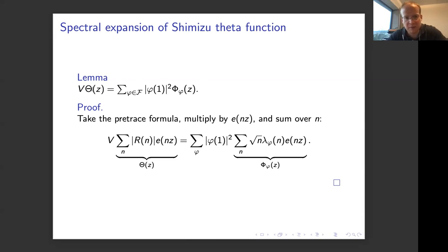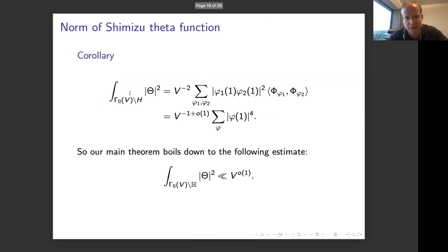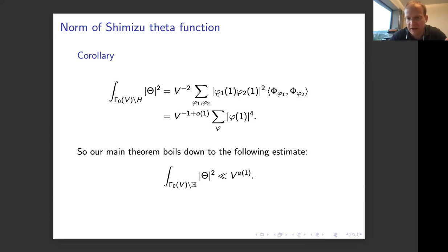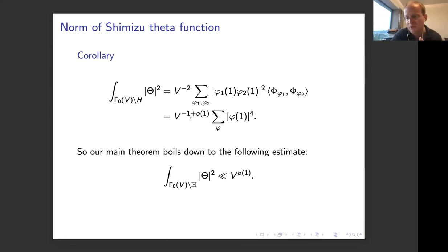We need one more ingredient: the Jacquet-Langlands or Eichler-Shimizu lifts of our eigenfunctions phi. These are modular forms on Γ₀(V) obtained by taking the series expansion attached to the Hecke eigenvalues of a given form. A theorem proved by the authors using comparison of trace formulas shows these actually define modular forms, and any two such lifts are orthogonal to each other with inner product roughly V. We use this orthogonality seriously. A basic lemma says the Shimizu theta function can be written as a weighted sum of these Jacquet-Langlands lifts, where the weights are exactly the numbers we want to bound.